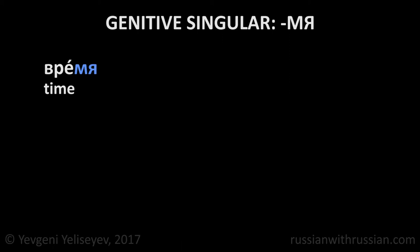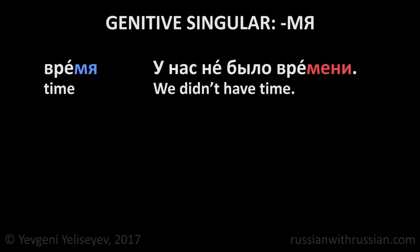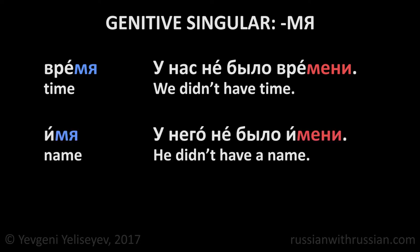Neuter gender nouns ending in -мя: Время — time. У нас не было времени. We didn't have time. Имя — name. У него не было имени. He didn't have a name.